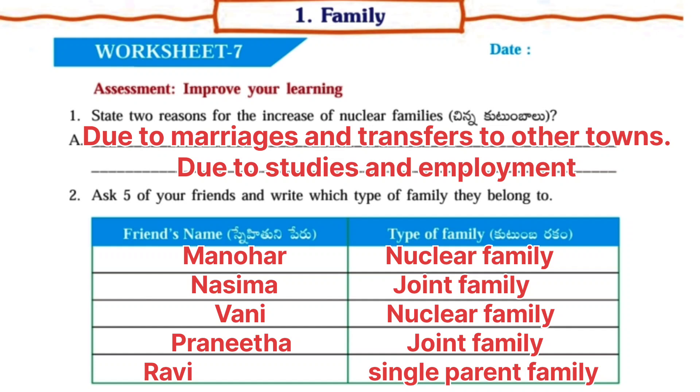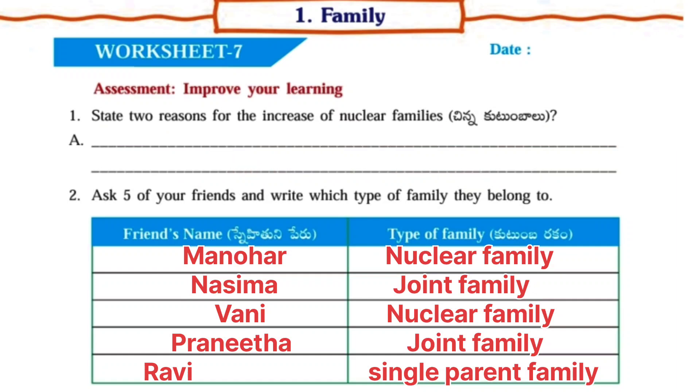Nasima — joint family. Vani — nuclear family. Pranita — joint family. Ravi — single parent family. You have to write your friend's names.